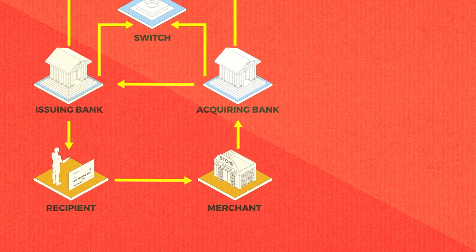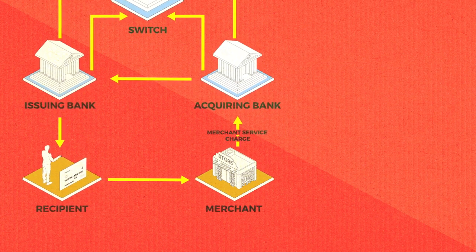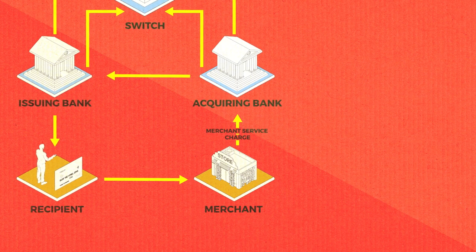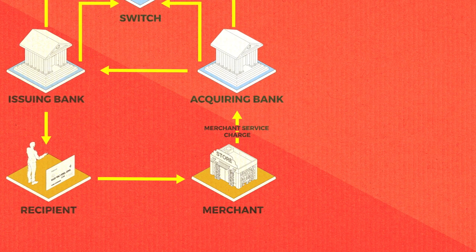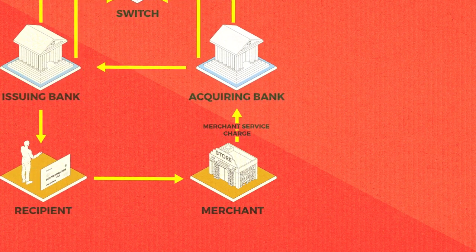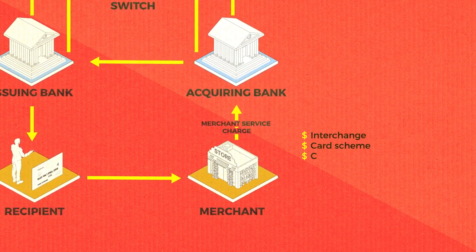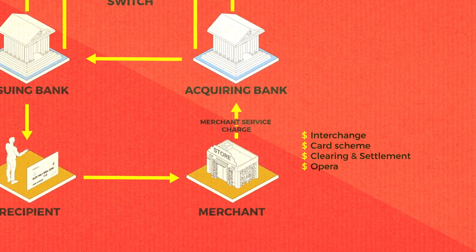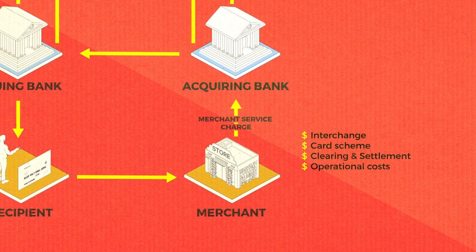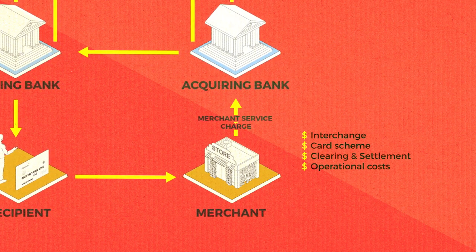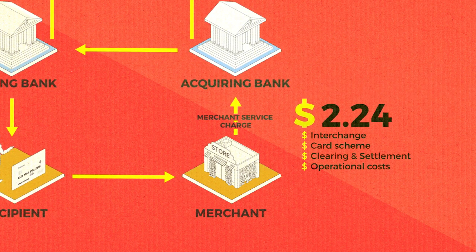When looking at costs, let's first look at the demand side in a bit more detail. First is the merchant services charge, sometimes called the merchant discount fee. For each card transaction, the merchant pays a fee to its bank. This bank transfers the sales price into the merchant's account after deducting this charge, the bulk of which is made up of interchange, card scheme fees, clearing and settlement fees, and their own operational costs. In normal consumer transactions, this charge is passed on to the customer in the form of higher prices. The merchant services charge is typically between $1.65 and $2.24, though it can be higher.